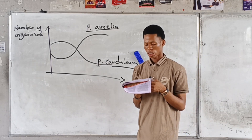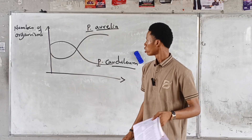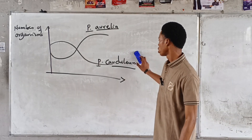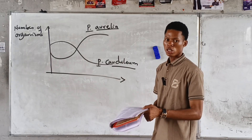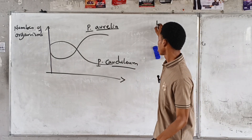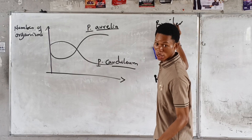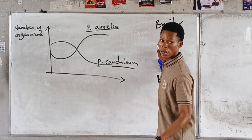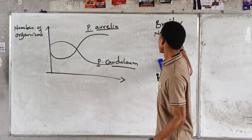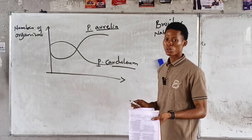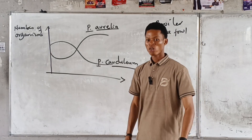The answer is A — interspecific competition. Why? Different species. Now let me ask you a question: if brawler and the native flower are competing for food, what type of competition is that? Is that interspecific or intraspecific?